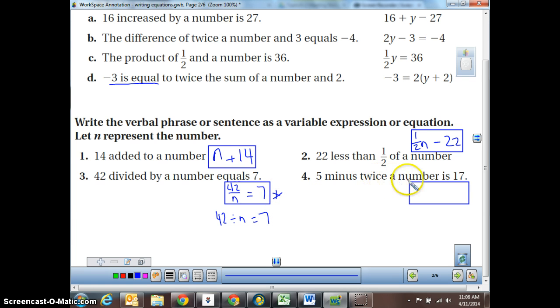5 minus twice a number is 17. Well, we know it is 17, so we can put that in there. Now we're done with that. 5 minus twice a number. So that means I'm having 5 and I'm taking away from it twice a number. 5 minus 2n equals 17. Good job.